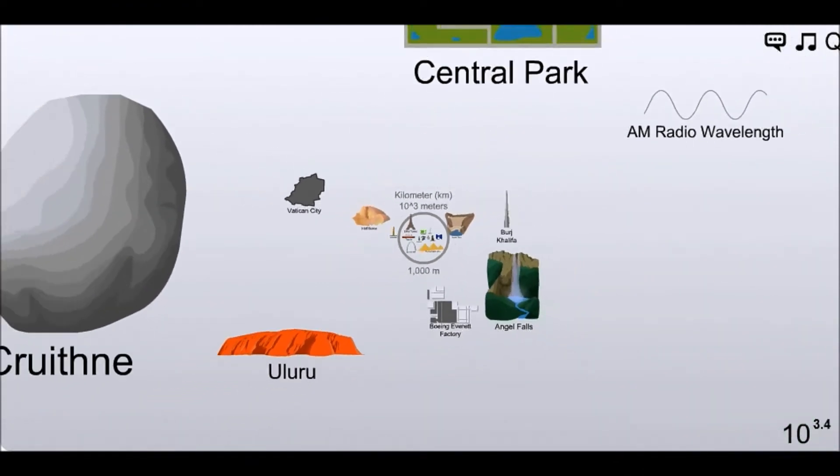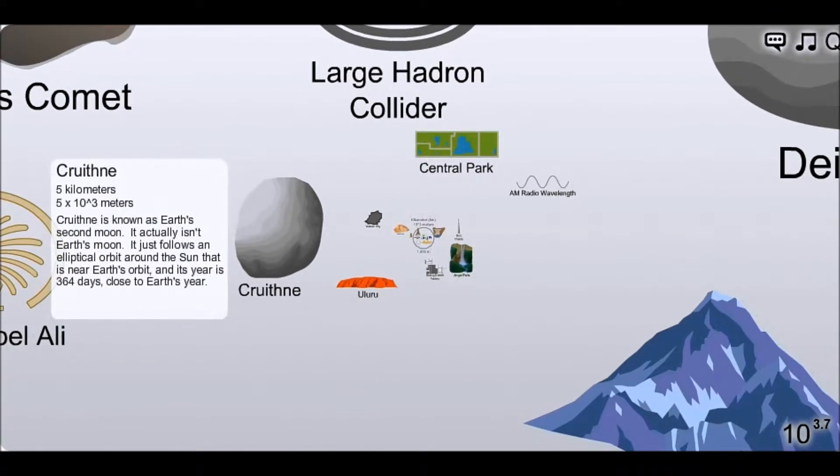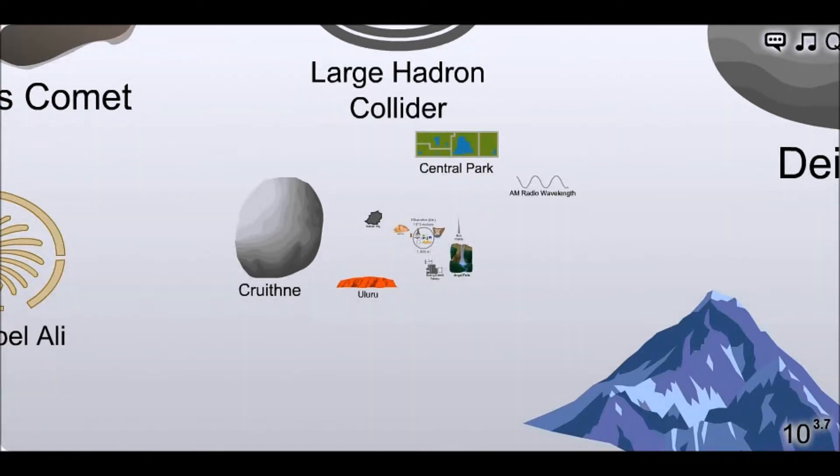Angel Falls. Mount Yuri. I don't know what that is. What is that? Cruithne is known as Earth's second... We have a second moon. It actually isn't Earth's moon. It just follows an elliptical orbit around the sun that is near Earth's orbit. And its year is 364 days, close to Earth. Huh. See, I didn't know that. That's actually really cool.